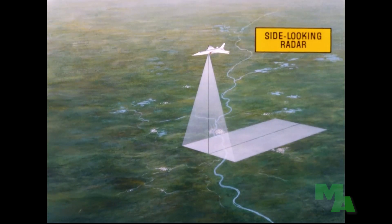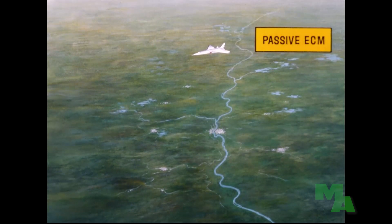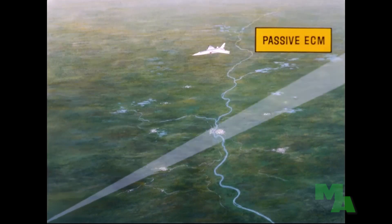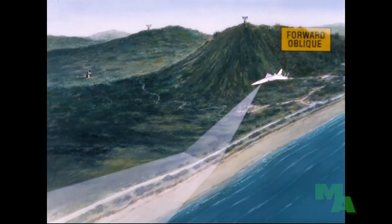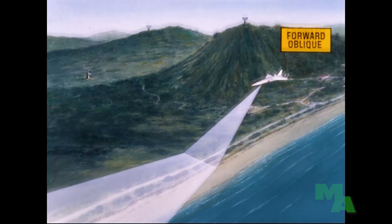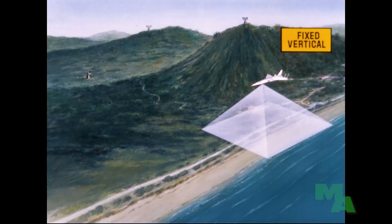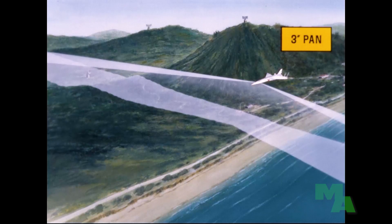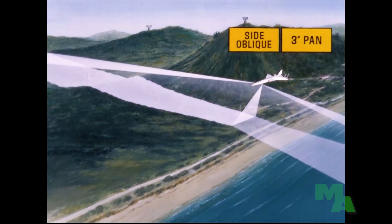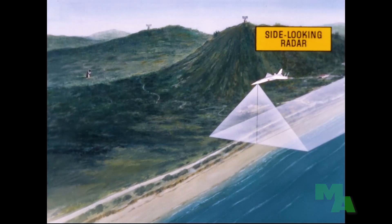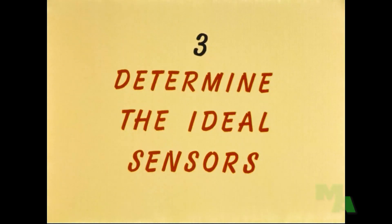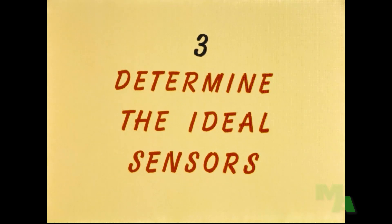Side-looking radar employing a 40-mile wide strip would be desirable, and passive electronic countermeasures equipment would be utilized to collect data on electronic emitters. For the low-level beach reconnaissance, the forward oblique camera would be useful, as would the fixed vertical camera. The 3-inch pan camera and/or side oblique cameras would be specified, and side-looking radar would also be useful. These are the ideal sensors for the two flights; whether they are all available is a matter to be learned from the support center.